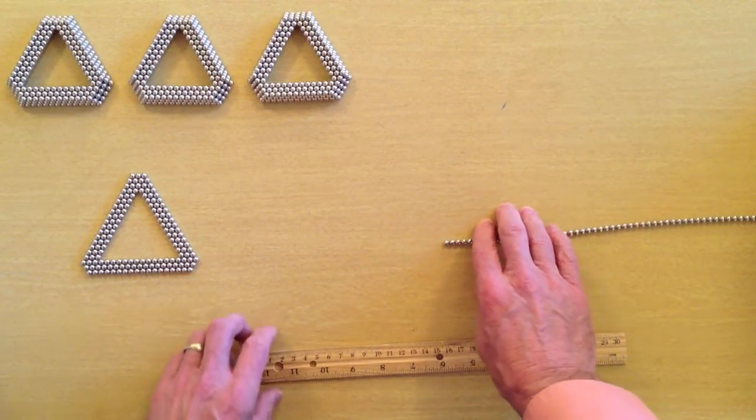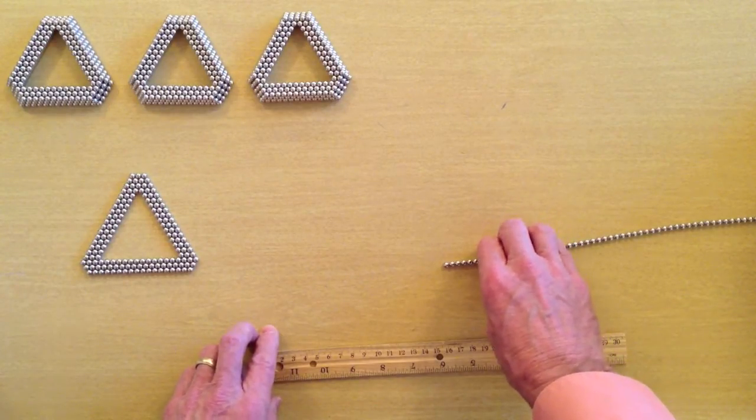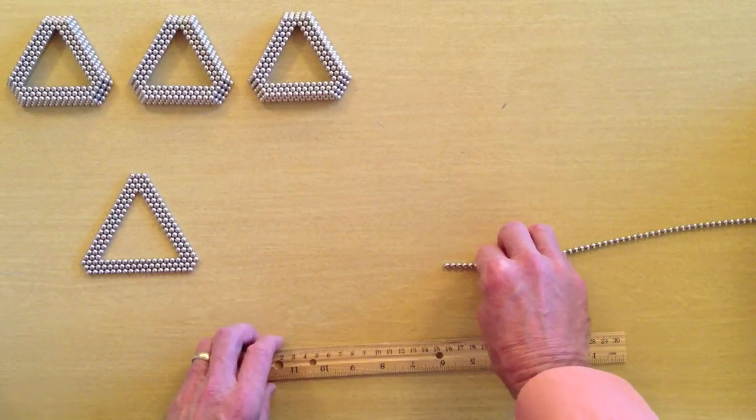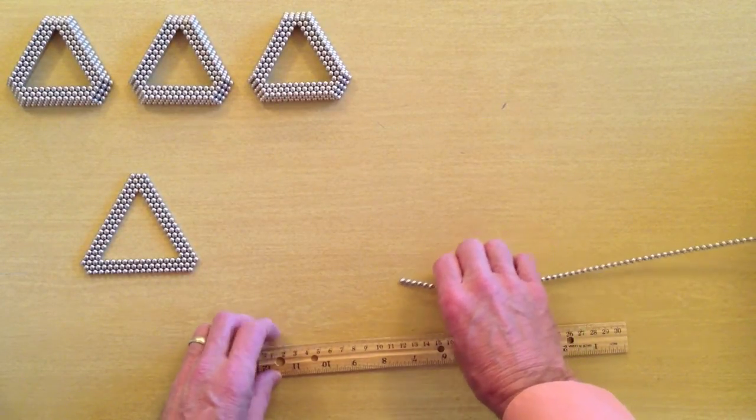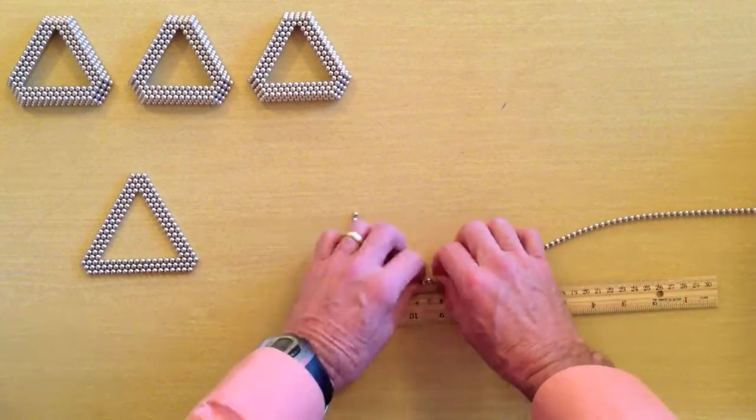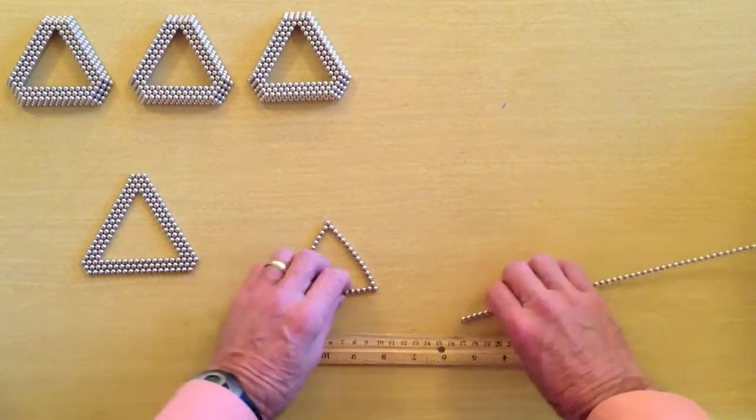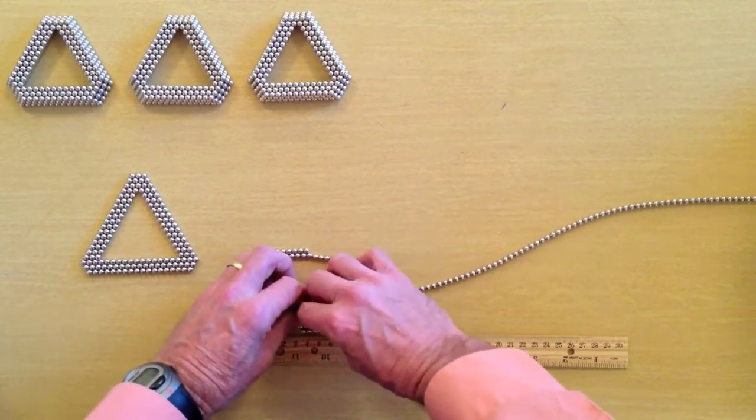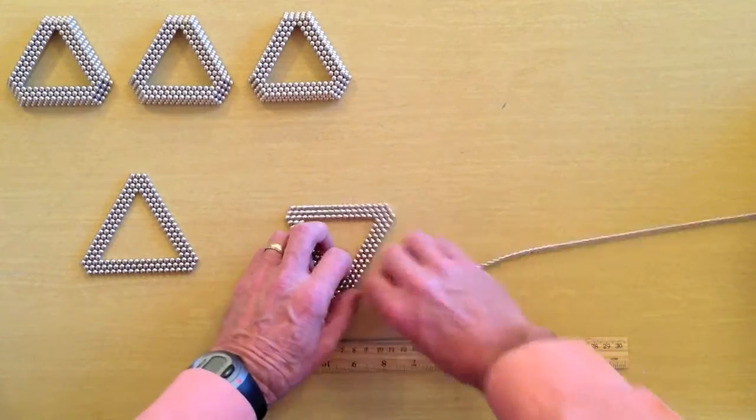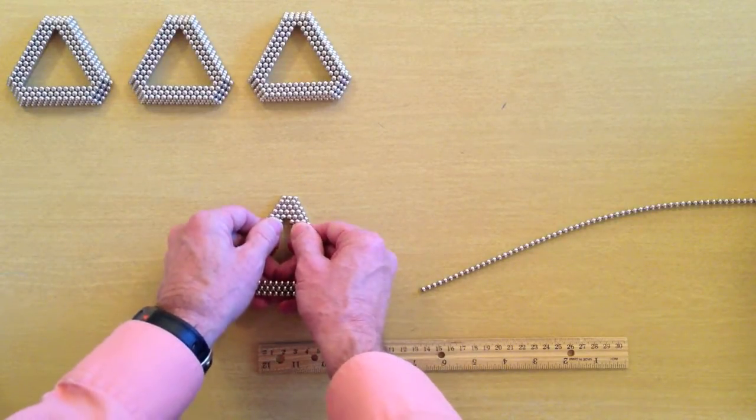The second layer is based on a single strand triangle with an edge length that is five magnets fewer than the octahedron edge length. So for an octahedron edge length of 20 we need a single strand triangle with an edge length of 15 this time. The second layer is placed atop the first layer.